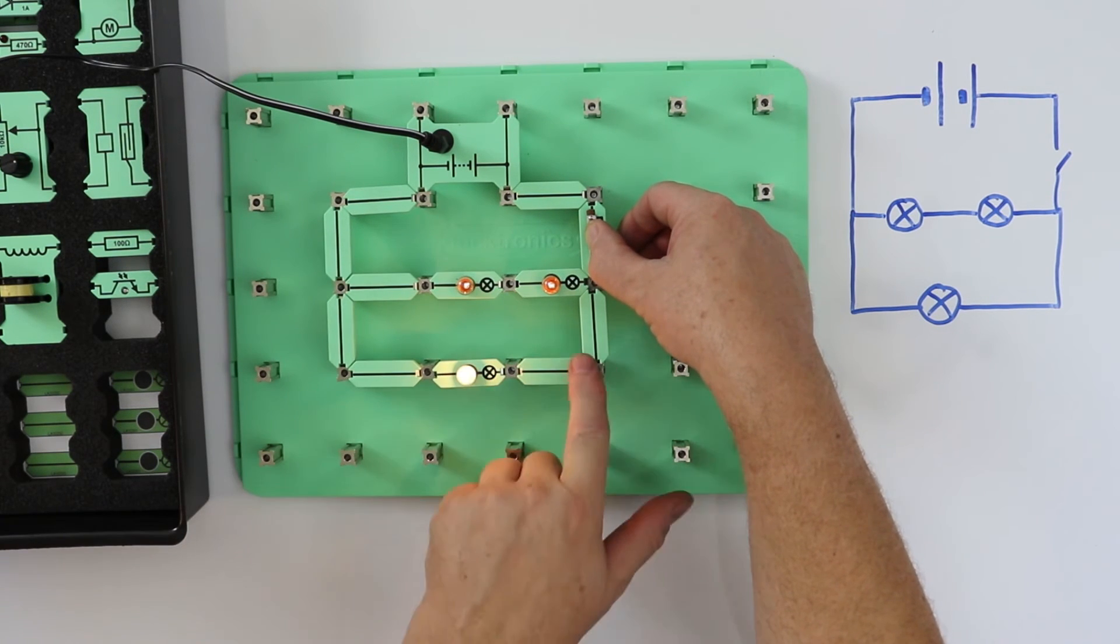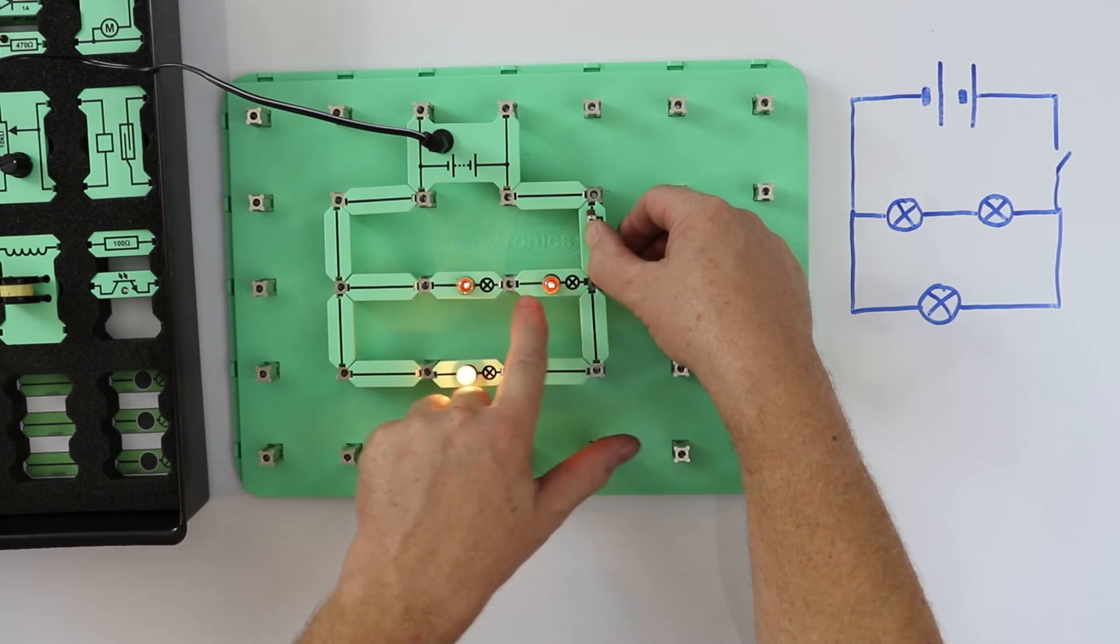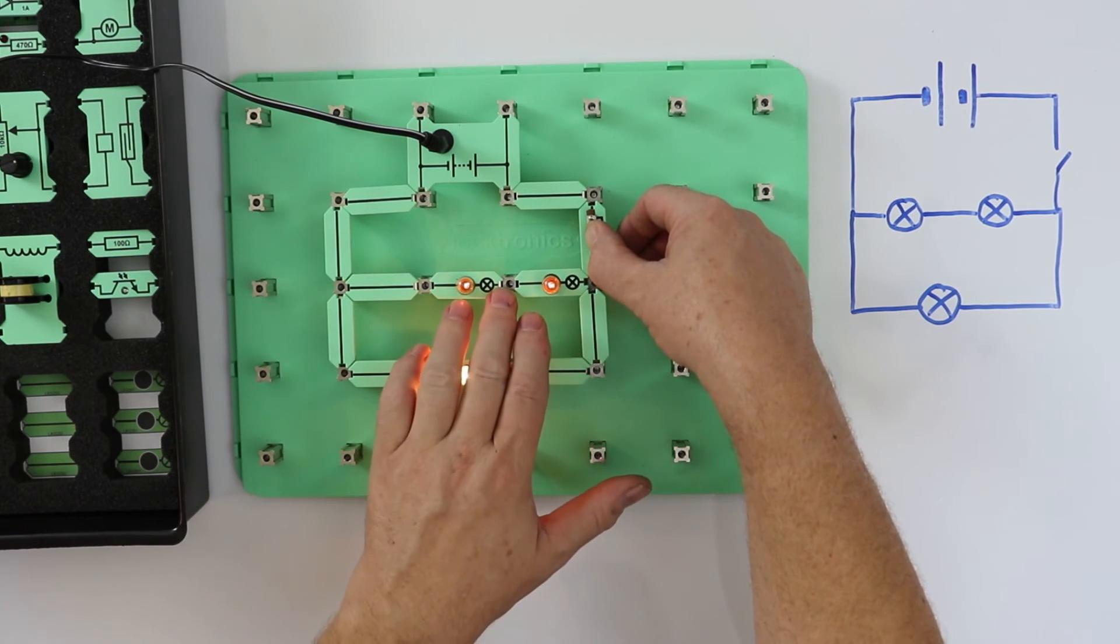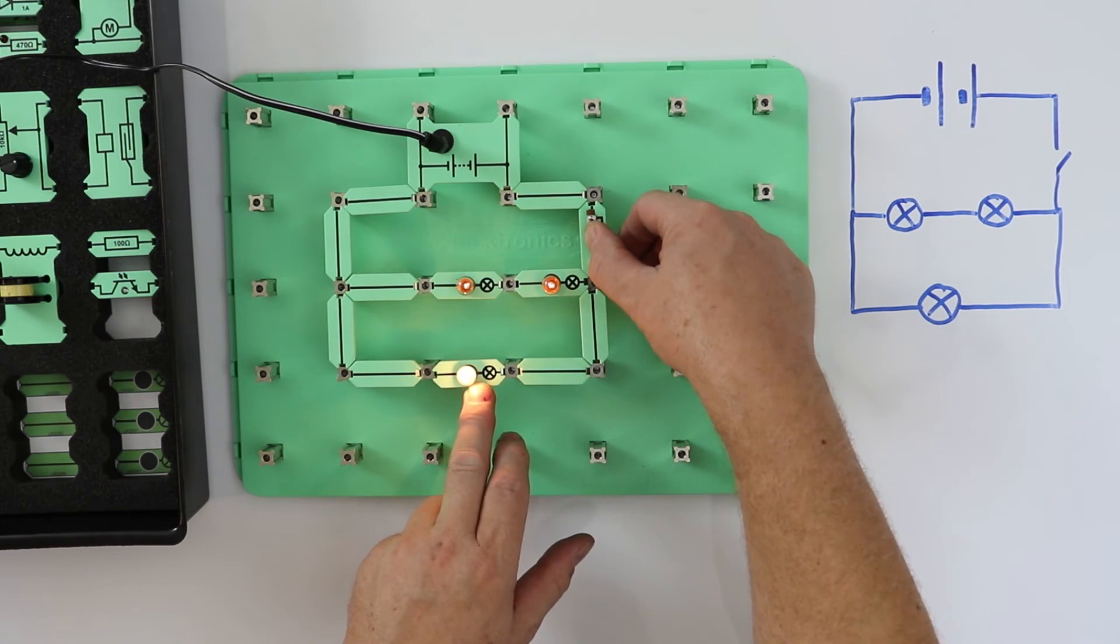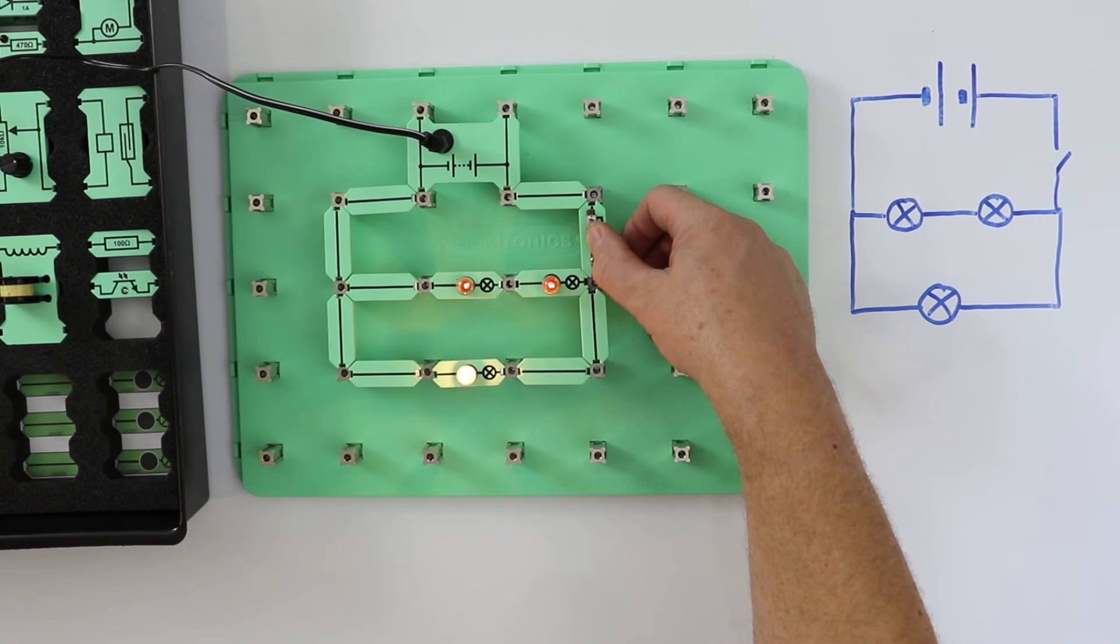One route goes through only one bulb. The other route goes through two bulbs. That route is twice as difficult for the electrons. So most of the electrons take the easy route through just one bulb. The more electrons flow per second, the greater the electric current.